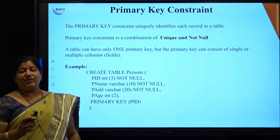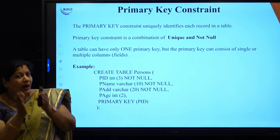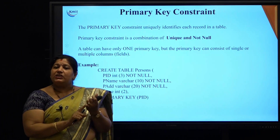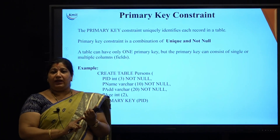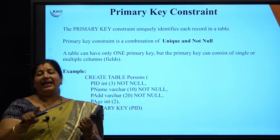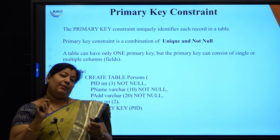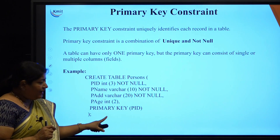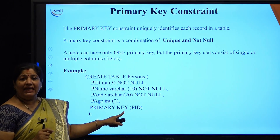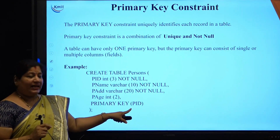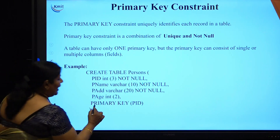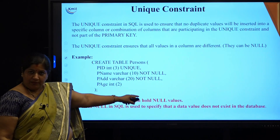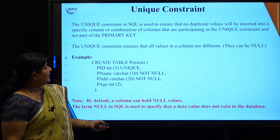Coming to the primary key constraint, this is one of the candidate keys selected as primary key, which is a combination of unique and not null. It will help you to uniquely identify each row in the table. In DDL, I mention the primary key attribute or integrity constraint for which particular column — here I am making p_id as the primary key, so my product ID is going to become the primary key.